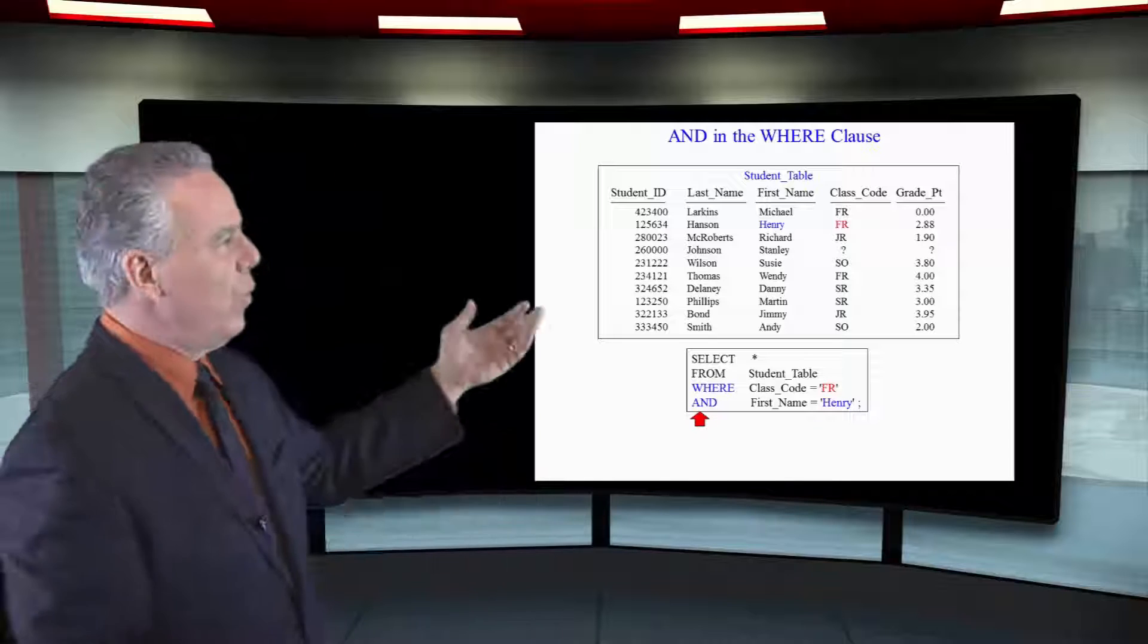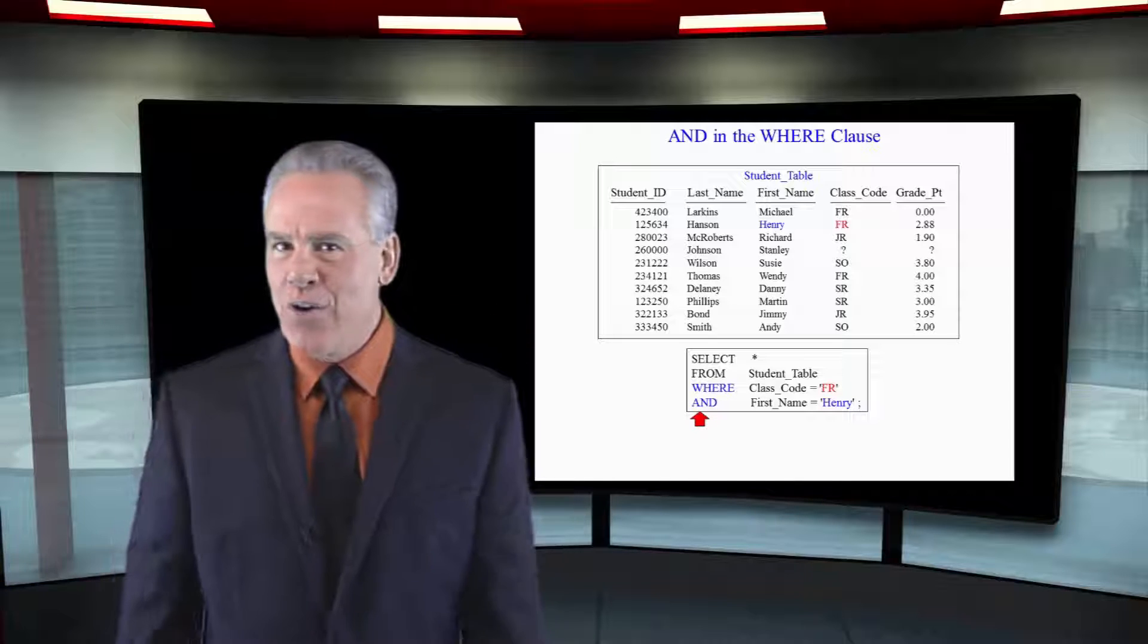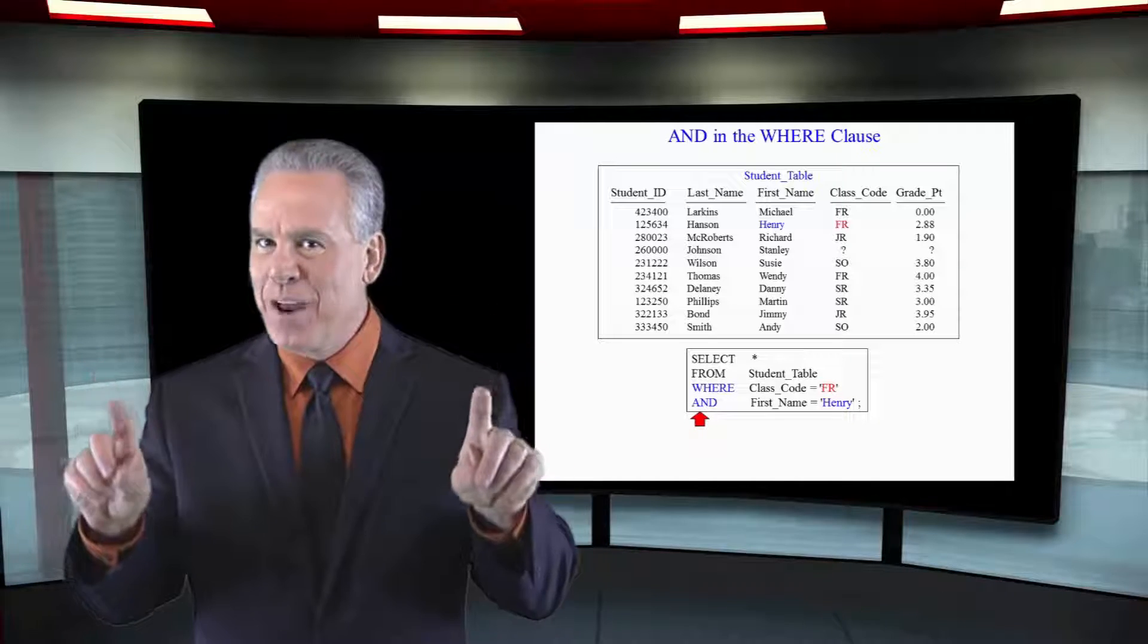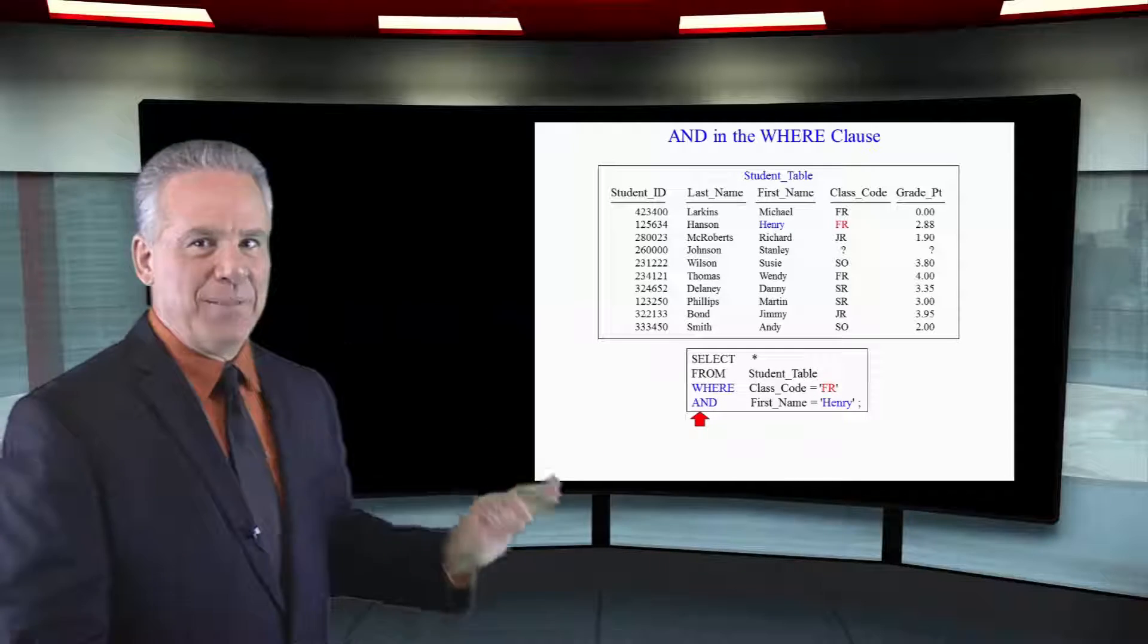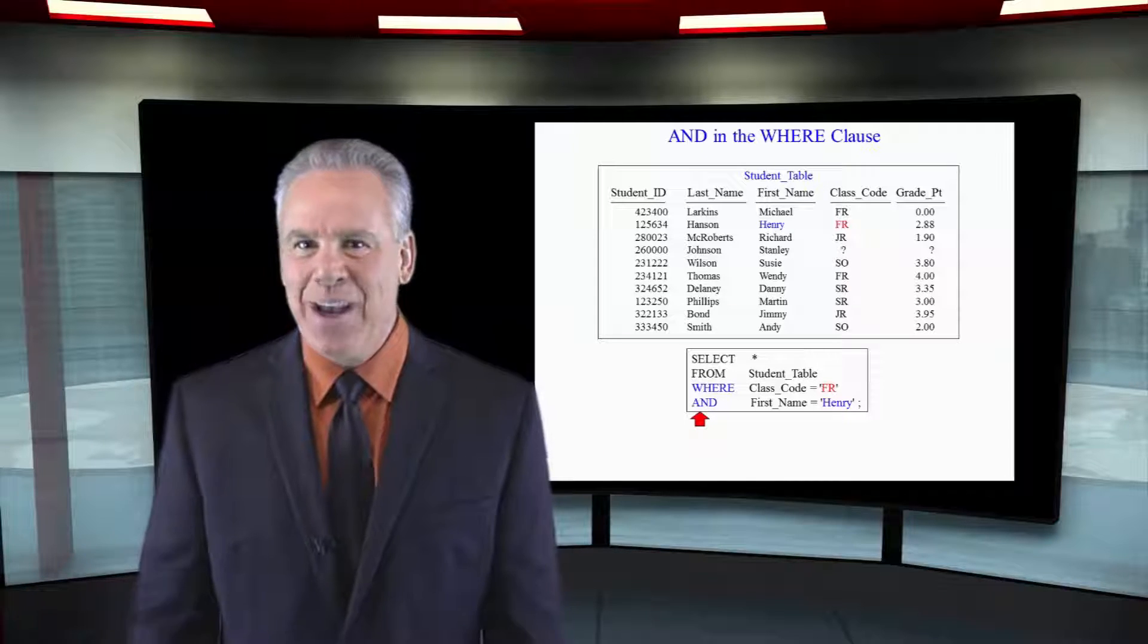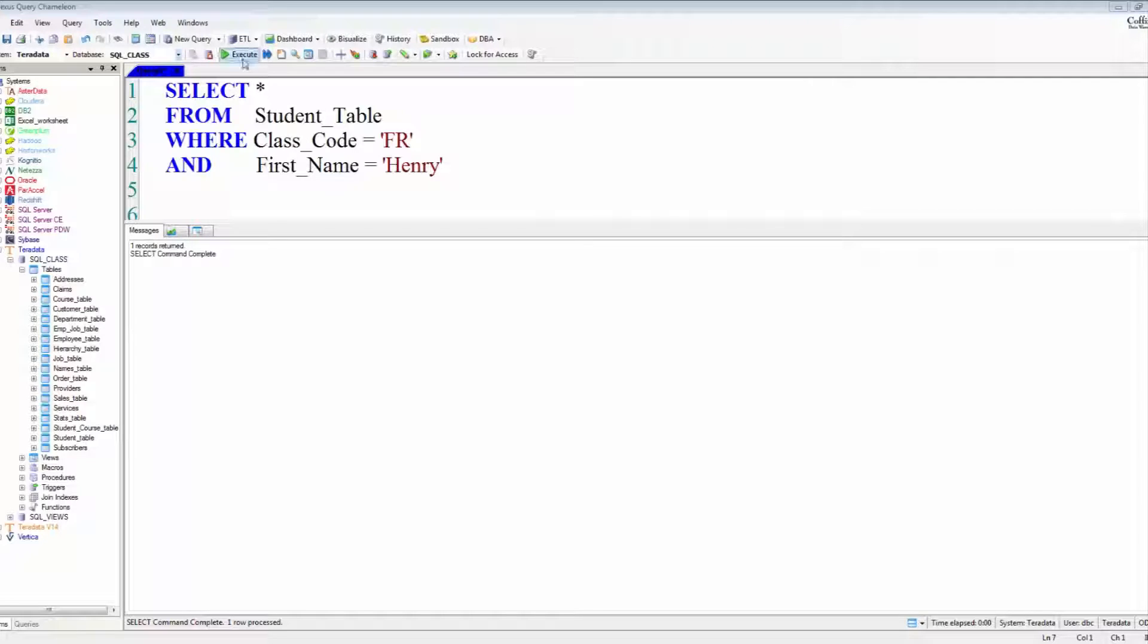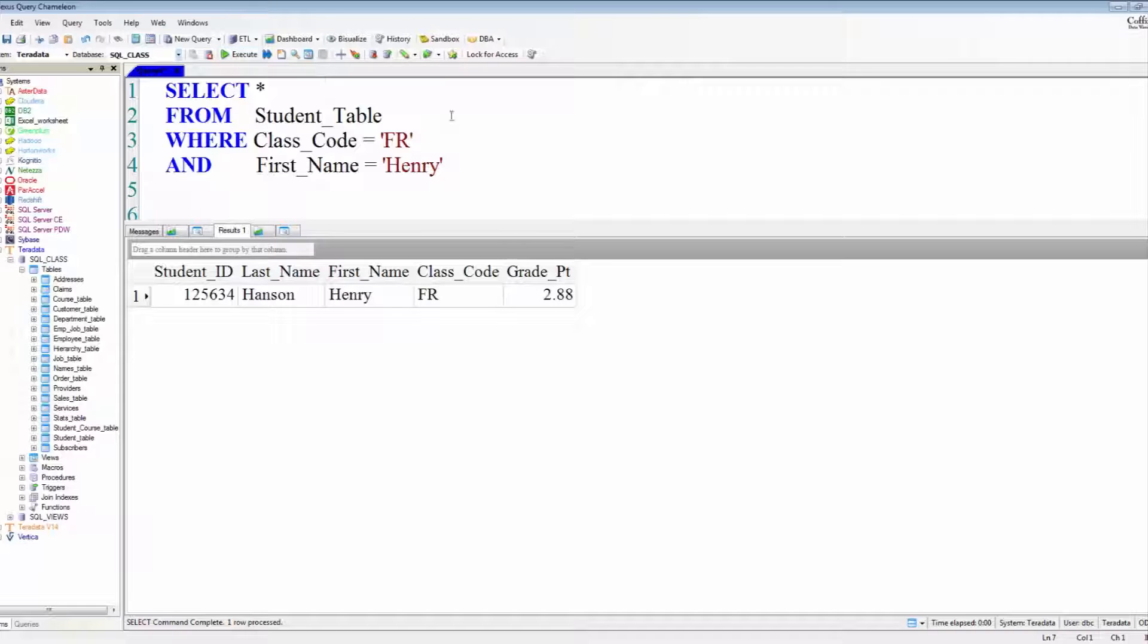And you can see here, we want to know where the class codes equal to freshman and the first names equal to Henry. Both of those conditions have to happen before that row comes back on the report.